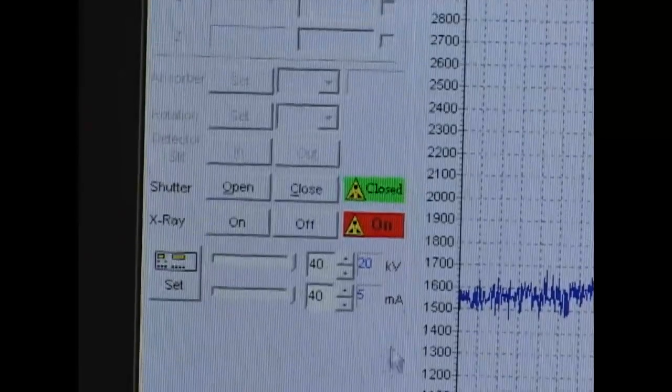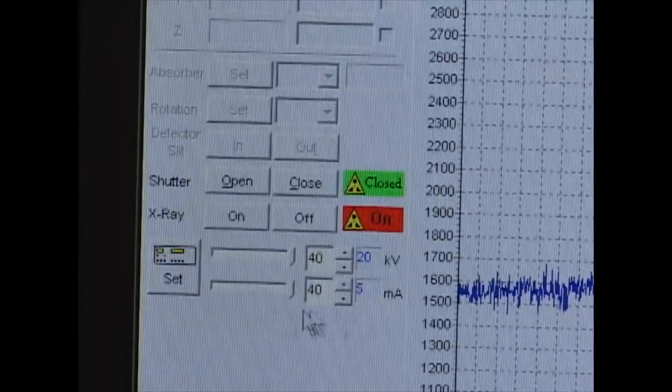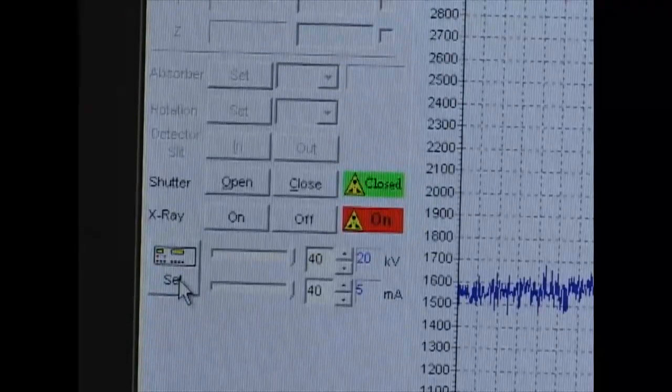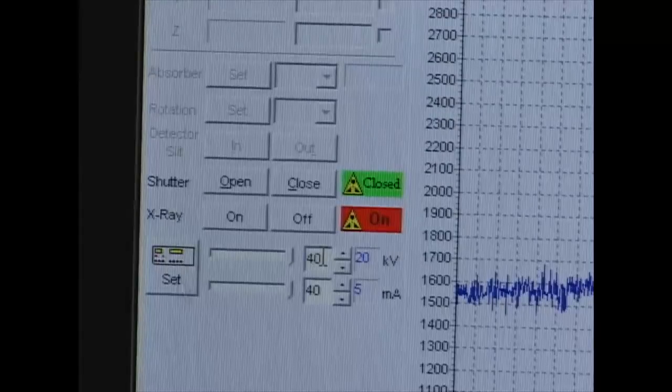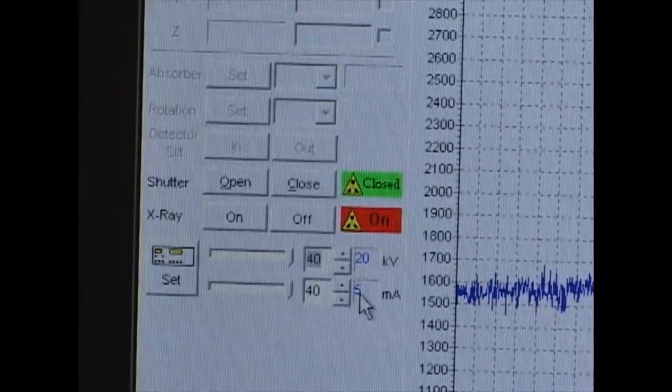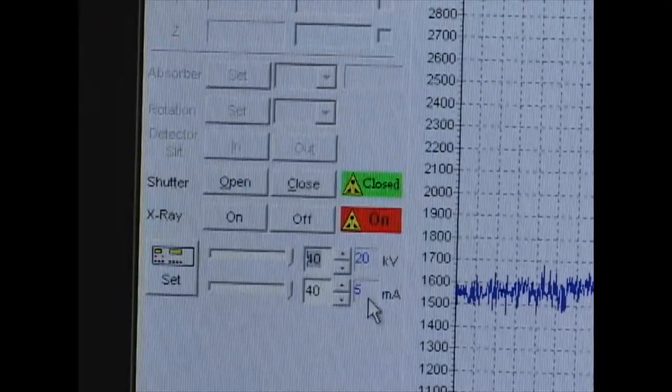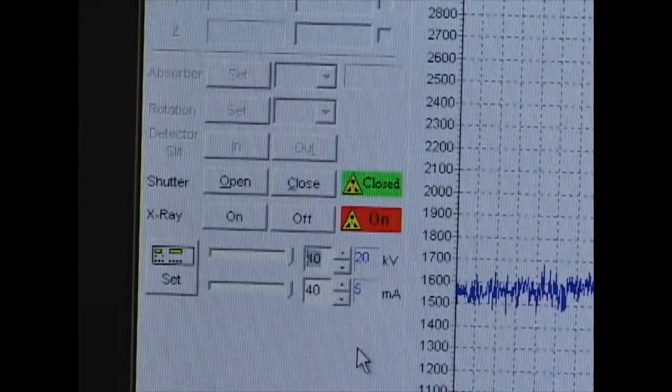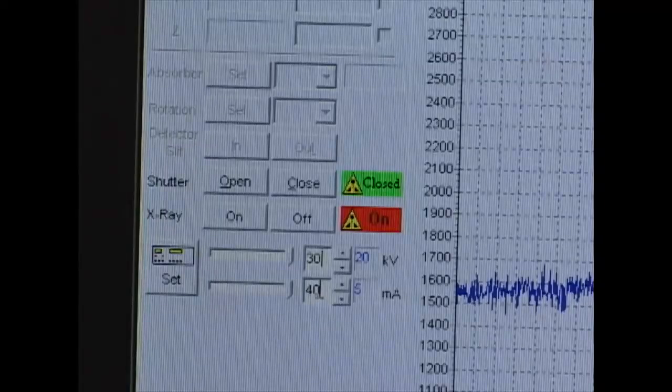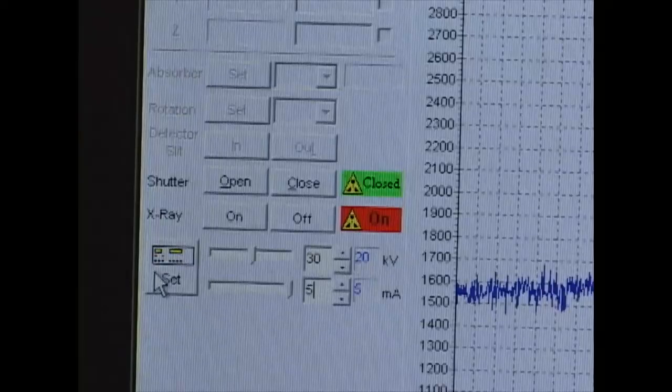When you do want to begin, you want to ramp your power up to 40 and 40 kilovolts. It's important not to just hit set right here. You want to ramp it up slowly. So what you want to do is input the values first. And so we're going to ramp the kilovolts up by 10 kilovolts first, leaving the current the same. And then we're going to ramp up the current. So we're going to put in 30 kilovolts and 5 milliamps. And then press the set button.